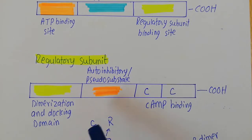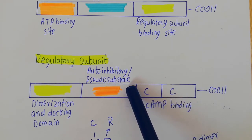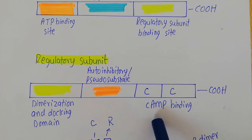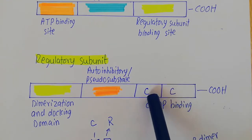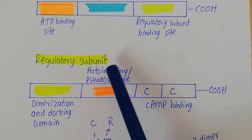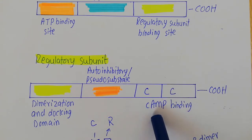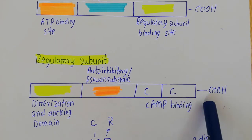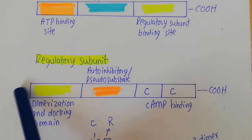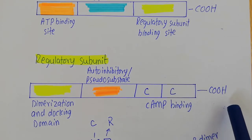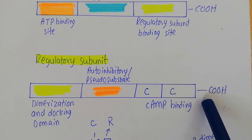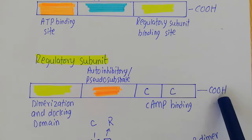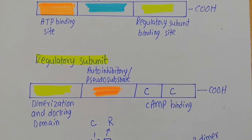The regulatory subunit has another important site known as the auto-inhibitory or pseudo-substrate site, and then there is the cyclic AMP binding site. The regulatory subunit actually has two cyclic AMP binding sites, meaning two molecules of cyclic AMP can bind to one regulatory subunit. The regulatory subunit is a complete protein with its own N-terminal and C-terminal, as is the catalytic subunit.